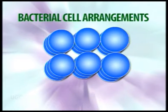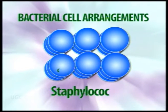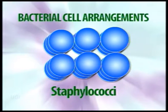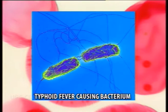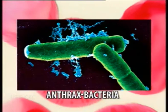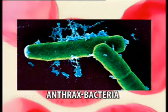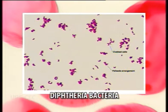They can also be present in the form of grape-like structures or clusters, which we call the staphylo type of arrangement. Rods also vary in shape: they can be slender as in the case of the typhoid fever-causing bacterium, rectangular as in the case of the anthrax-causing agent, or club-shaped as in the case of diphtheria bacteria.